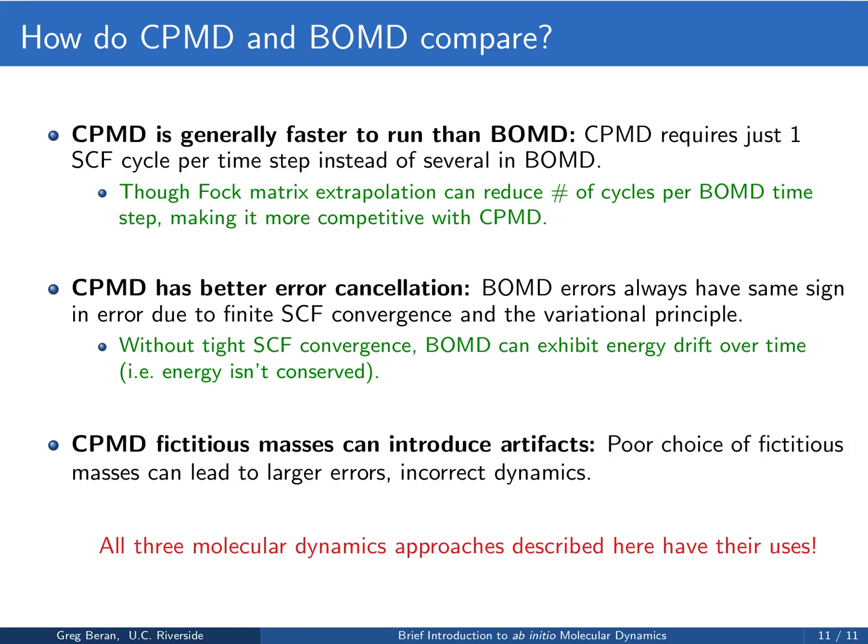While those are great strengths of CPMD, you do have to be careful with the fictitious masses. If you choose those poorly, it can lead to larger errors and therefore incorrect dynamics. It can take some experience and intuition to figure out the appropriate masses to give to the orbitals, and occasionally results can be nonsensical and traced back to a poor choice of fictitious mass. Overall, all three molecular dynamics approaches described here have their uses. It really just depends on what types of questions you're trying to answer — whether it's viable to pre-compute the potential energy surface, whether you can afford Born-Oppenheimer MD, or whether you'd rather use the shortcuts with CPMD.